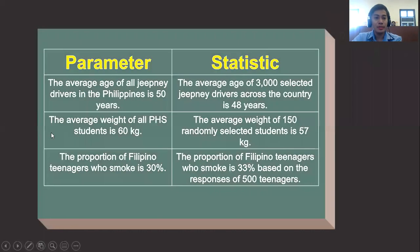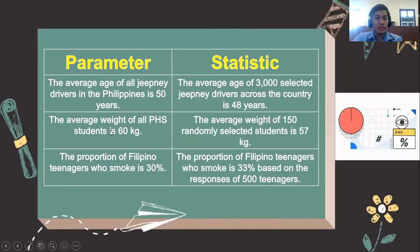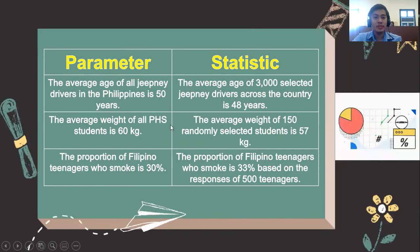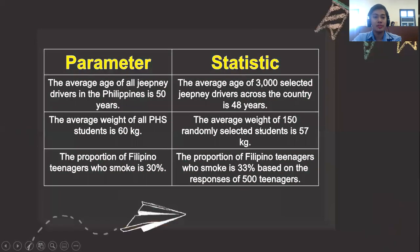Secondly, the average weight of all PHS students is 60 kilograms. While for a statistic, the average weight of 150 randomly selected students is 57 kilograms. Notice that the entire population is described by the parameter, which is all PHS students, and the statistic is described by the 150 randomly selected students.